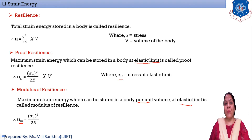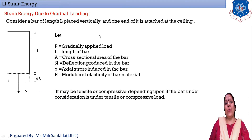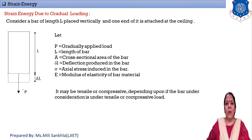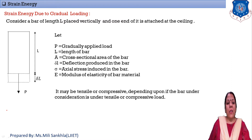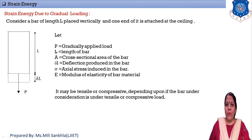Now the first derivation: strain energy due to gradual loading. A bar of length L is given, and load P is applied gradually — meaning slowly, little by little. The notation: P = gradually applied load, L = length of bar, A = cross-sectional area, δL = deformation due to load, σ = stress, E = Young's modulus.